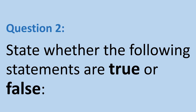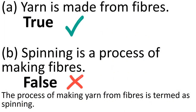Question number 2. State whether the following statements are true or false. Statement A: Yarn is made from fibers — it's true. Statement B: Spinning is a process of making fibers. We are aware that the process of making yarn from fibers is termed as spinning. Hence, it is a false statement.